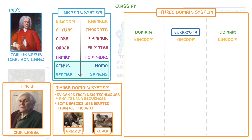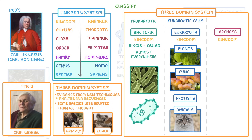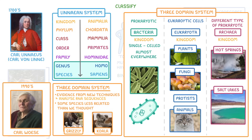One of these is Eukaryota, which contains all the organisms that have eukaryotic cells similar to ours, such as plants, fungi, protists, and other animals. Meanwhile, Bacteria refers to the very tiny single-celled prokaryotic organisms that are found almost everywhere. And finally, Archaea, which were originally thought to be bacteria, are actually a different type of prokaryotic cell, which are often found in extreme conditions like hot springs and salt lakes. You might sometimes hear bacteria being referred to as true bacteria, and archaea being referred to as primitive bacteria. Each of these domains is then subdivided into kingdoms, and then all of the smaller groups proposed by the Linnaean system.